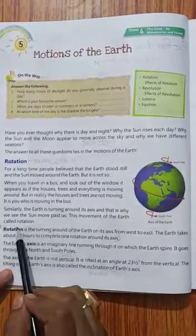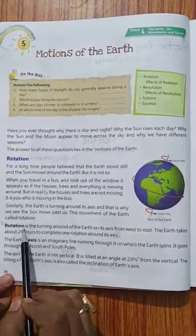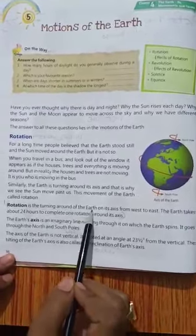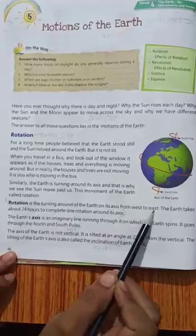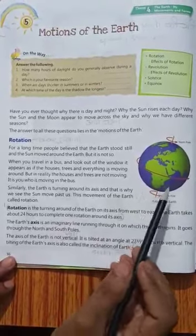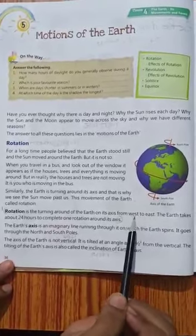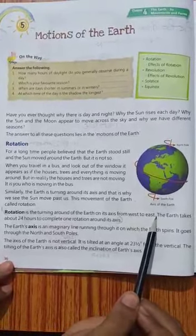This movement of the earth is called rotation. Or isko rotation kaitate hai. Rotation is turning around the earth on its axis from west to east. Yeh or iska direction hai, axis me. Kya hai? West to east. West to east me yeh rotation karthi hai.